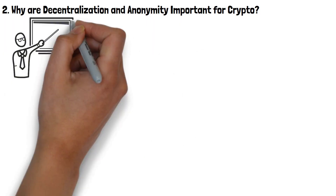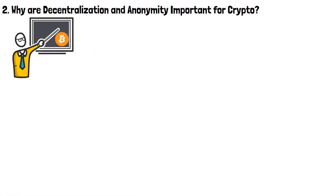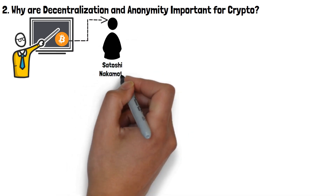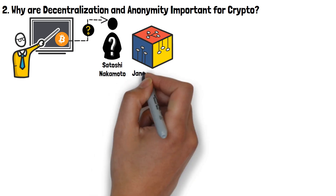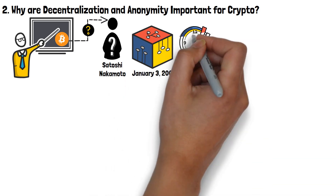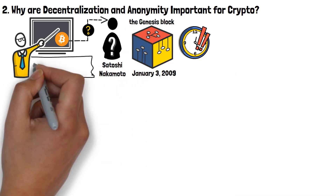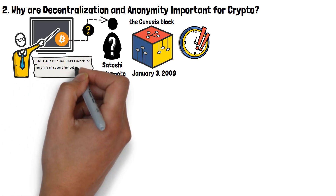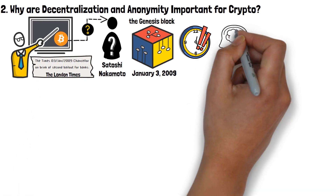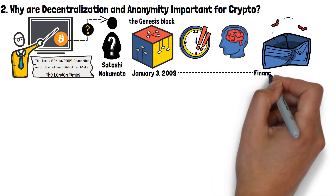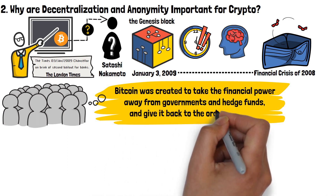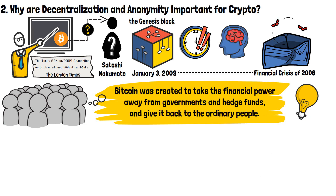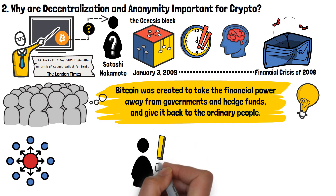Allow me to give you a very quick history lesson related to Bitcoin. The decentralized blockchain Bitcoin was created by someone known as Satoshi Nakamoto. The identity of the creator, or creators, of BTC is unknown to this day. The very first block of Bitcoin's blockchain — the Genesis block — was mined on January 3rd, 2009. Within it, Satoshi left a message: 'The Times, 3rd of January 2009. Chancellor on brink of second bailout for banks.' Bitcoin's inception came right after the financial crisis of 2008. The popular belief is that Bitcoin was created to take financial power away from governments and hedge funds, and give it back to ordinary people. This helps you understand why decentralization and blockchain anonymity are so fundamentally important for crypto.